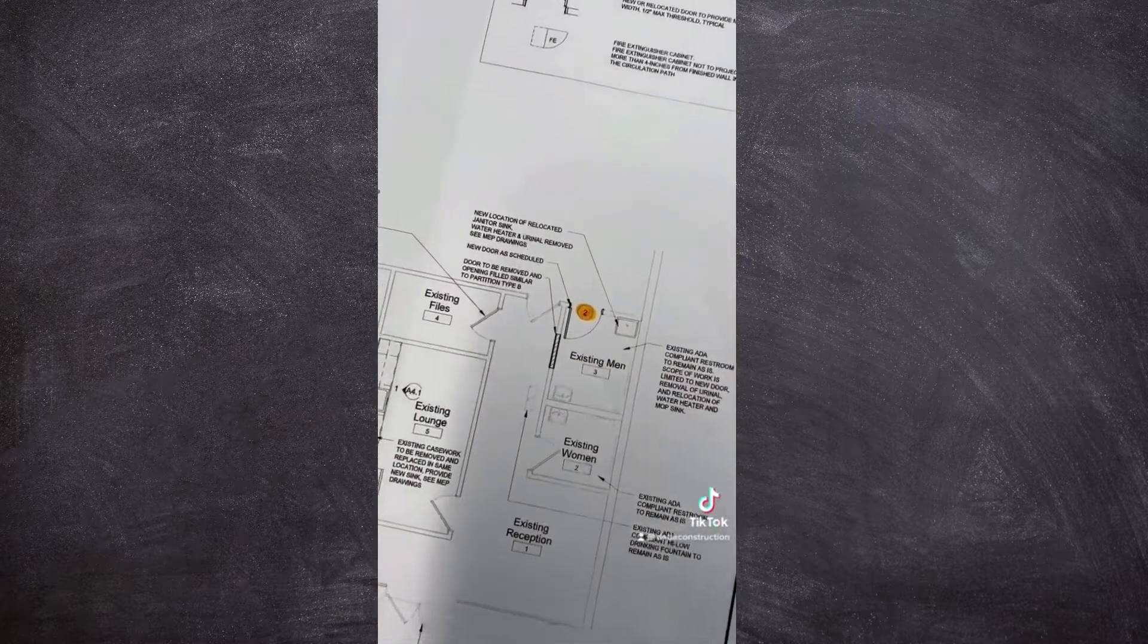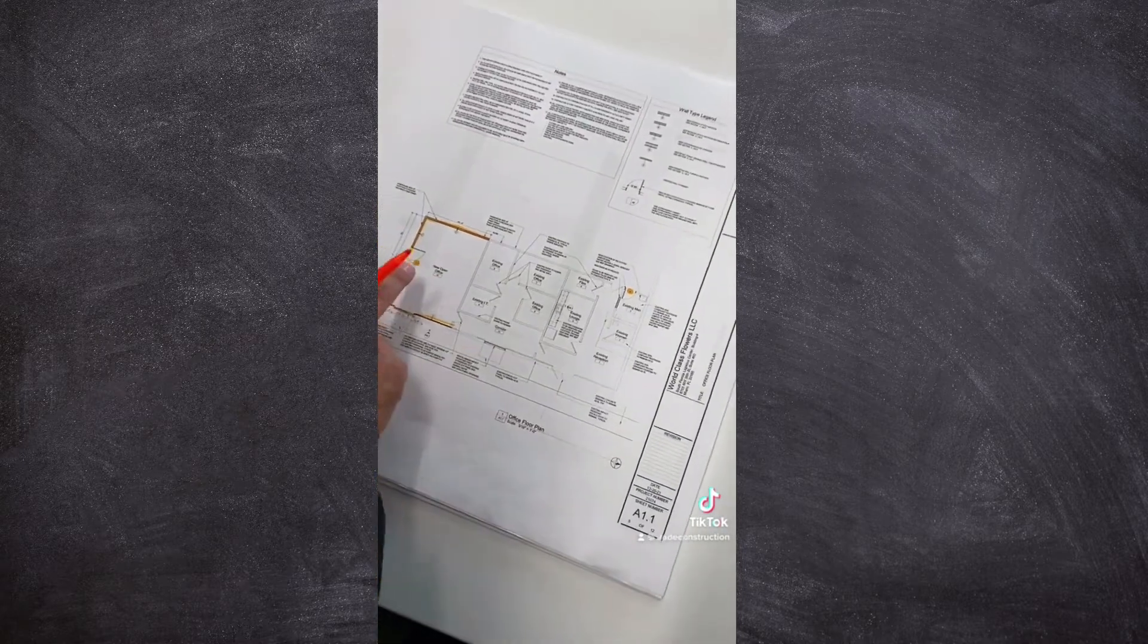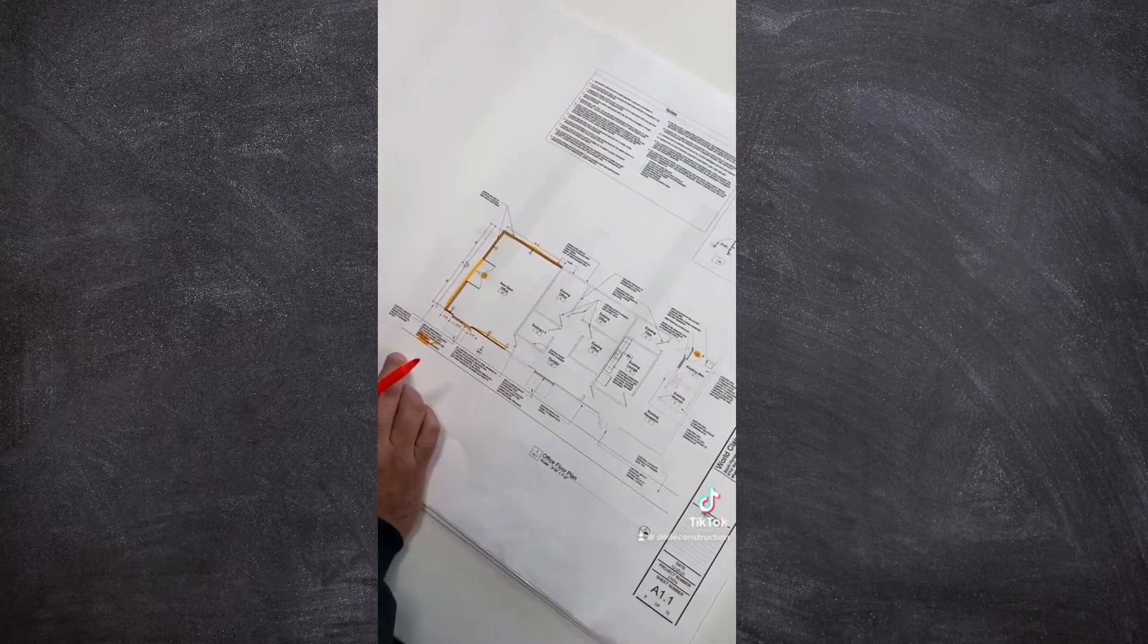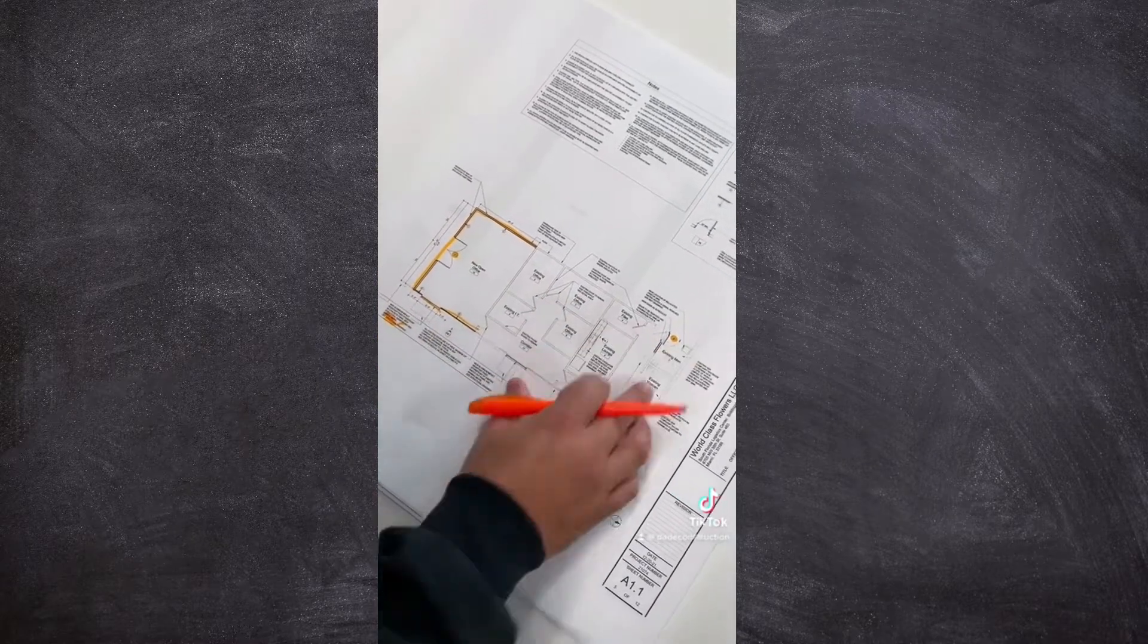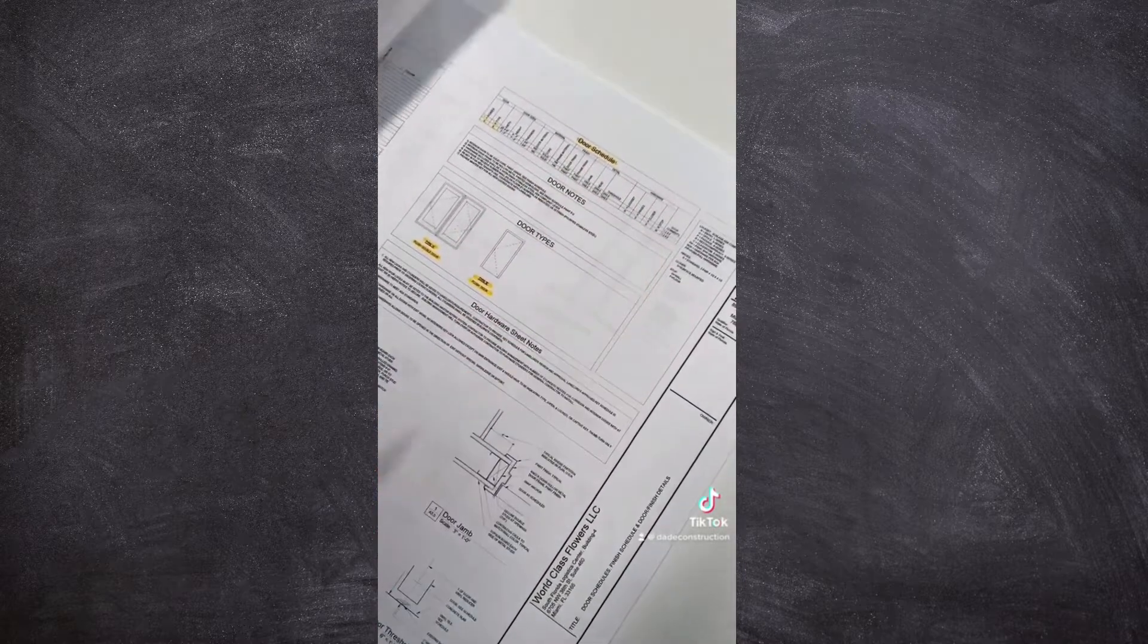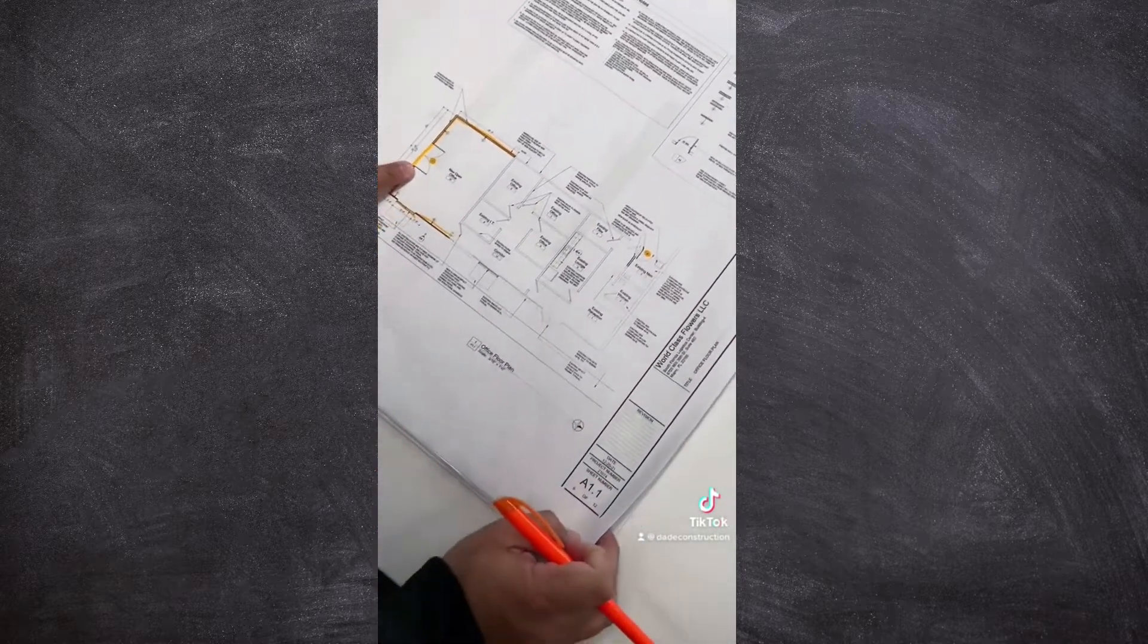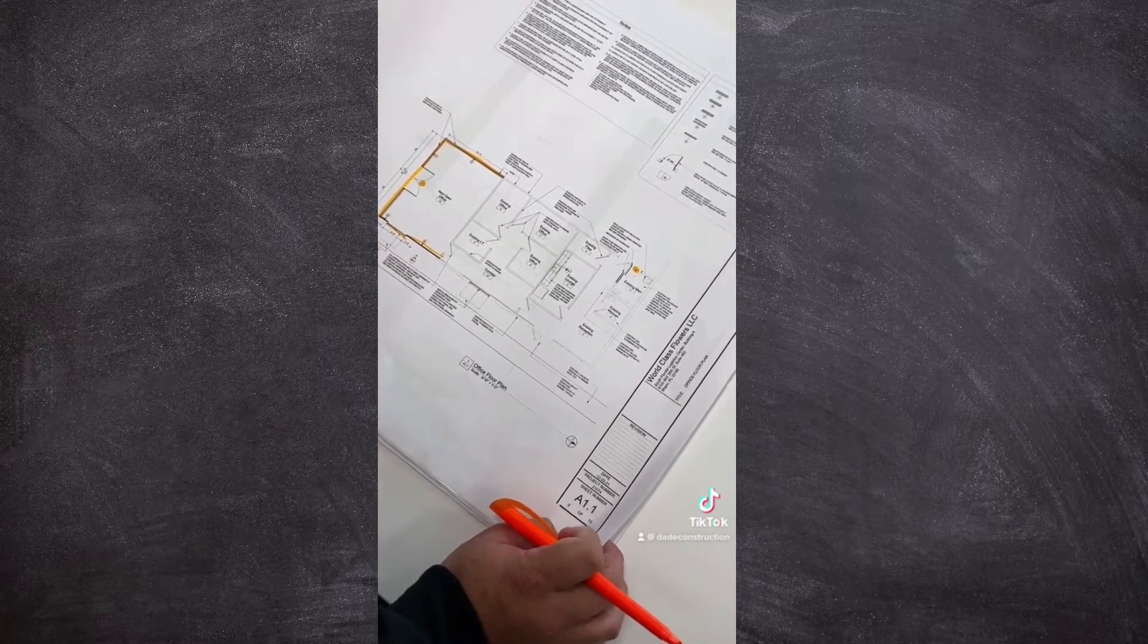So this project only has two different types of doors. But I just wanted to show you guys that it's very simple to read these door schedules. You see the type number one, number two, you go back to sheet A 5.0, you have your door schedule, and you go back and forth from one page to the other. And that's exactly how you read a door schedule on the architectural drawings.